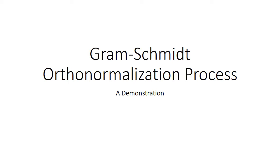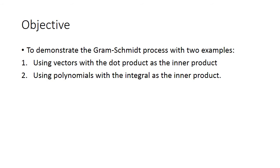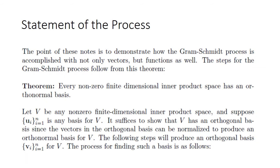This slideshow is on the Gram-Schmidt orthonormalization process. Our objective is to demonstrate the process with two examples: one using vectors with the dot product as the inner product, and another example using polynomials with the integral as the inner product. The point of these notes is to demonstrate how the Gram-Schmidt process is accomplished with not only vectors but functions as well.